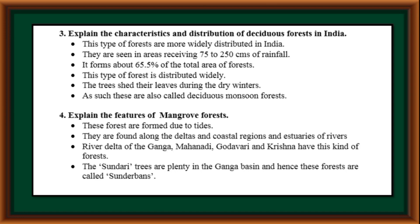Explain the characteristics and distribution of deciduous forests in India. This type of forest is more widely distributed in India. They are seen in areas receiving 75 to 250 cm of rainfall. They form about 65.5% of the total area of forests. Basically, the trees shed their leaves during the dry winters, and as such, these are also called deciduous monsoon forests.